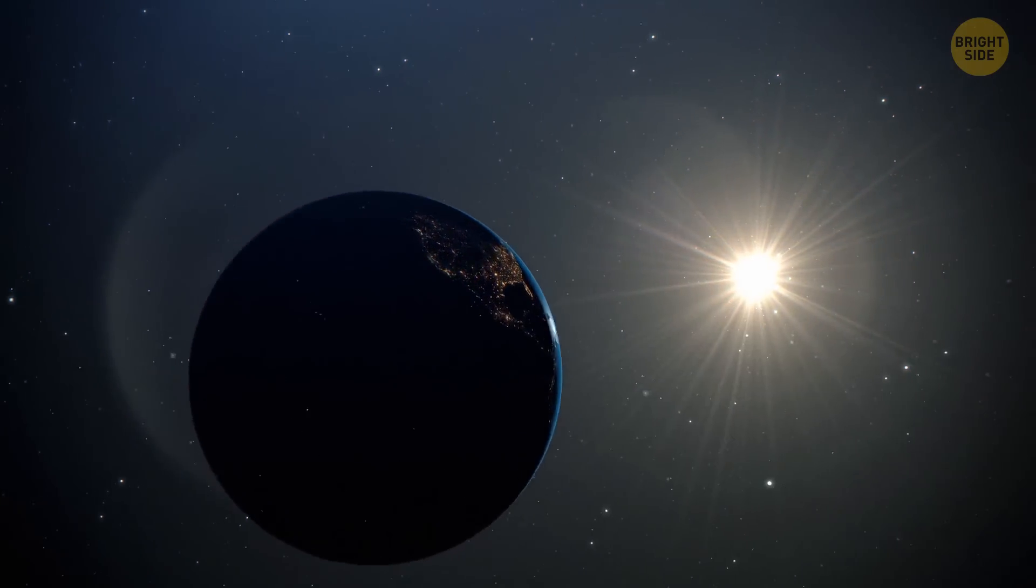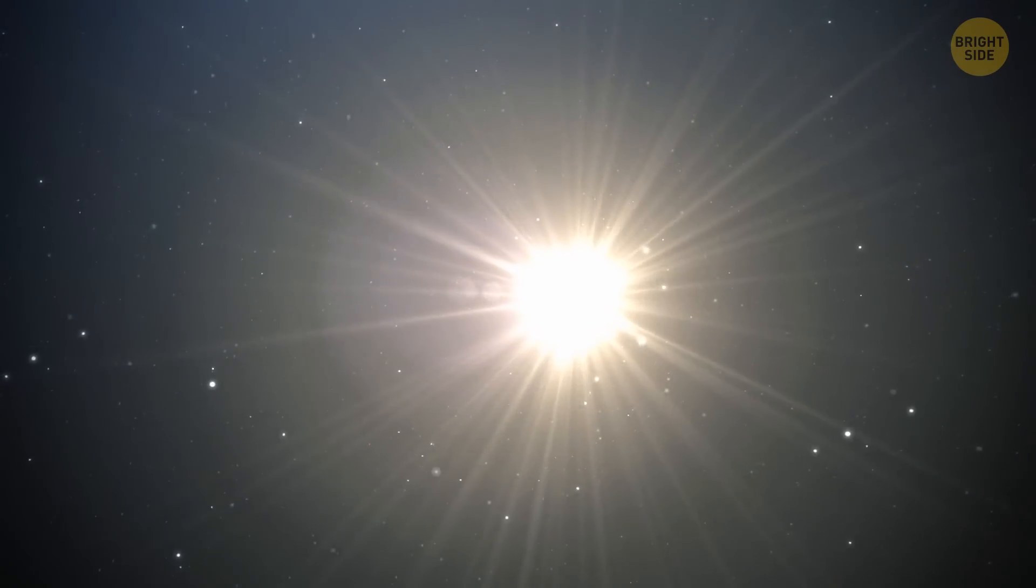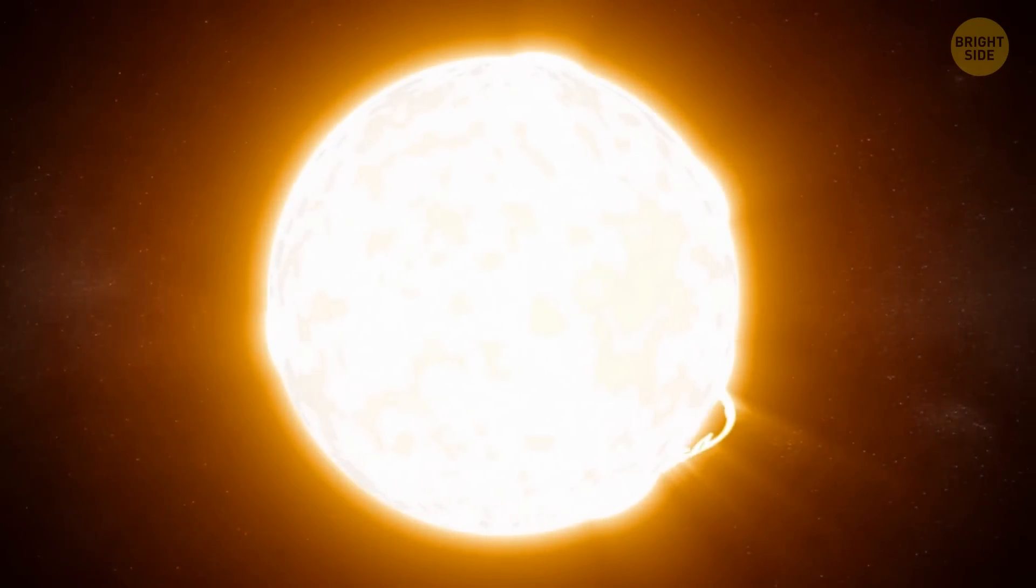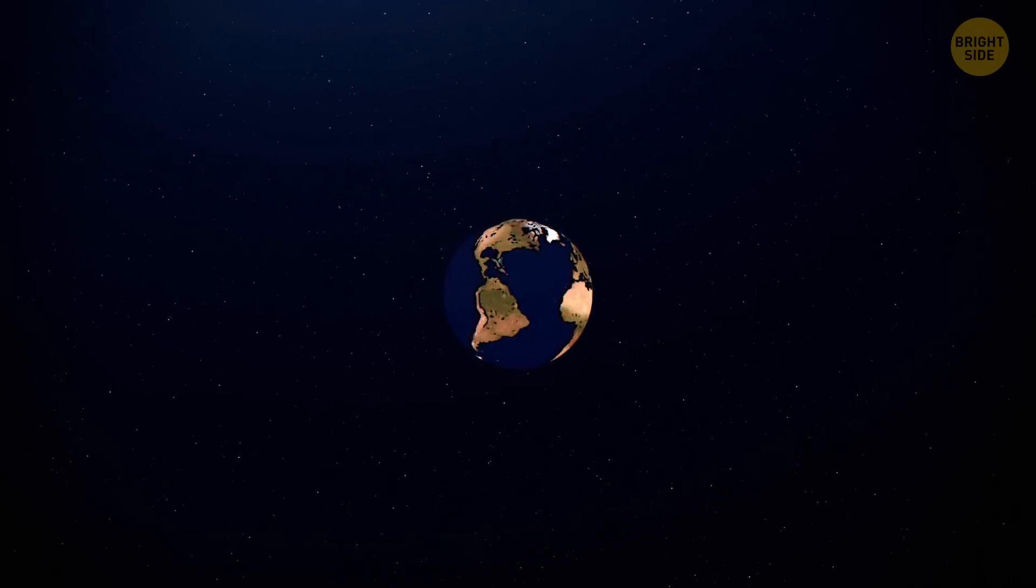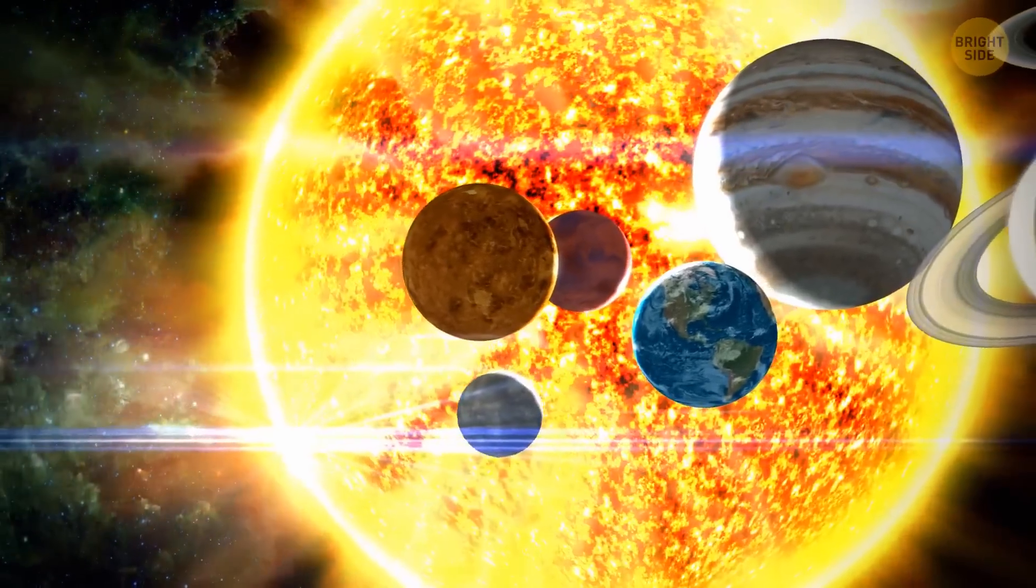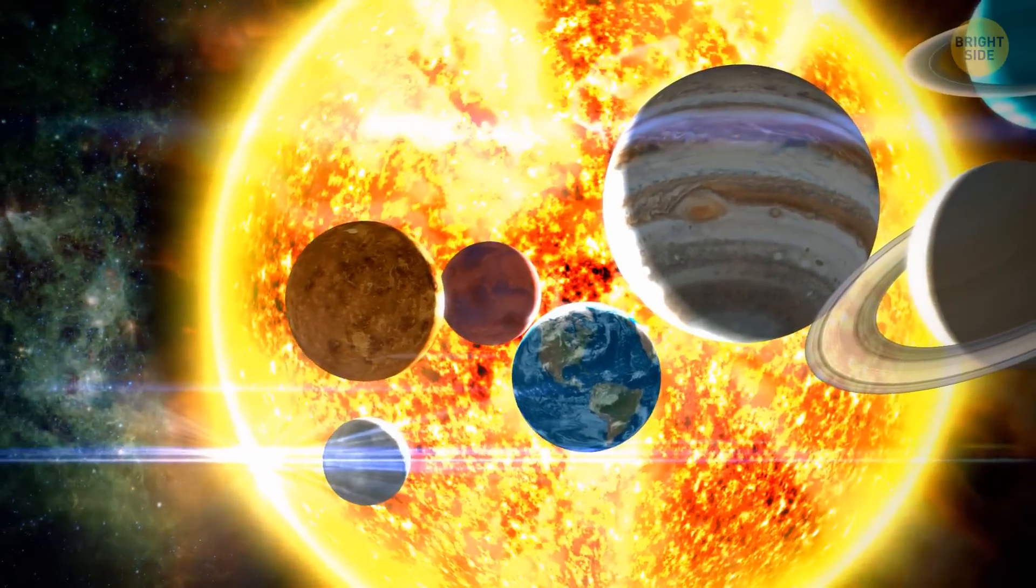We splash the star with all this water and nothing? Seriously? Oh, just look at this. The Sun has probably felt sorry for us and produced one little solar flare. It turns out that all water on Earth is actually just a pathetic drop for the Sun.